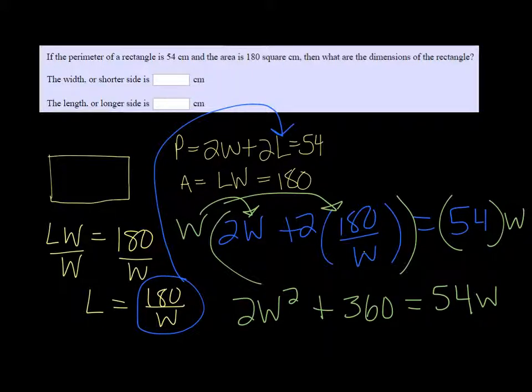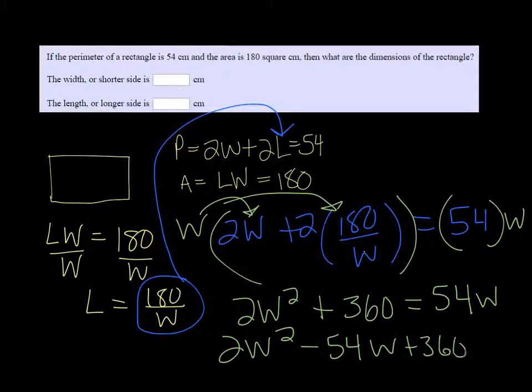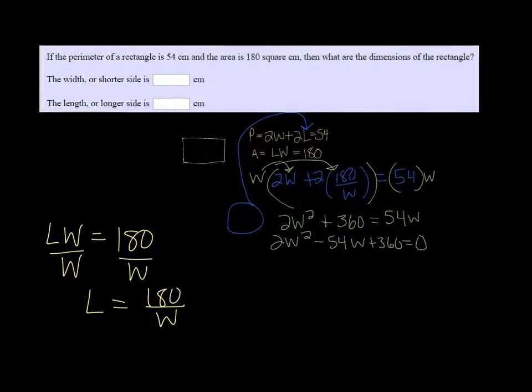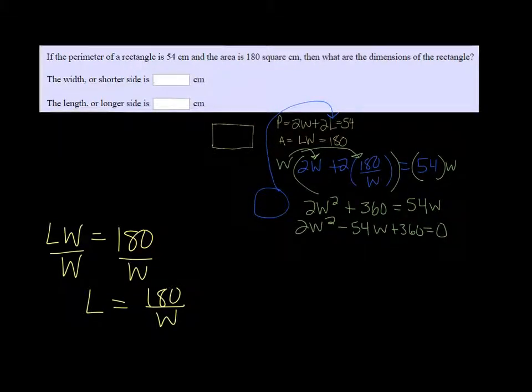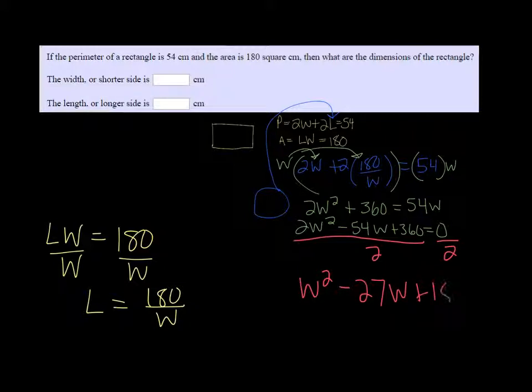Since we have a quadratic here, we want everybody to be on the same side. So I'm going to subtract that 54w over. Alright, so our equation equals 0 now. I notice everything can be divided by 2 on both sides, so I'm going to get W squared minus 27w plus 180. Now, at this point, we should be able to factor and solve these.